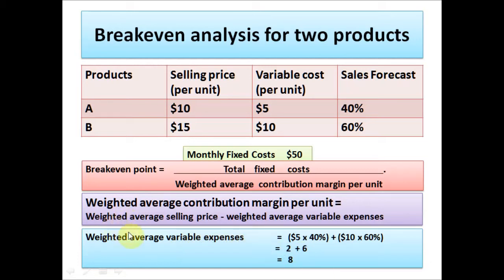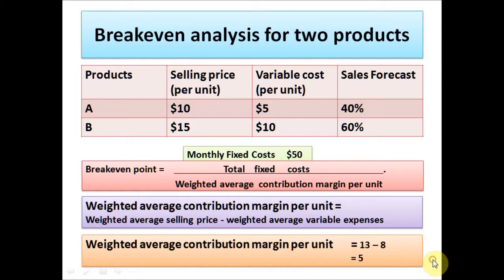Now that we have both the weighted average selling price and the weighted average variable expenses, we can calculate the weighted average contribution margin per unit. The weighted average contribution margin per unit is $13, which is the weighted average selling price, minus $8, the weighted average variable expense. So 13 minus 8 equals $5 — the weighted average contribution margin per unit.